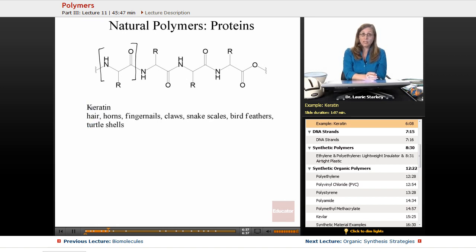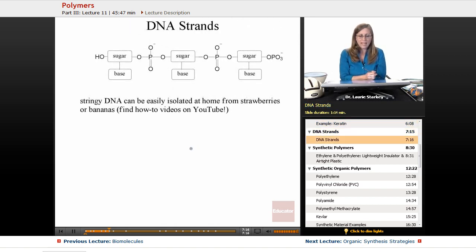And certain proteins also can be used for materials for structural things that nature builds. For example, keratin is a protein that's used for hair. It's used to build horns, fingernails, claws, the scales that are in snakes and bird feathers, turtle shells. So that's used in a wide variety of natural materials, some usually pretty durable materials.